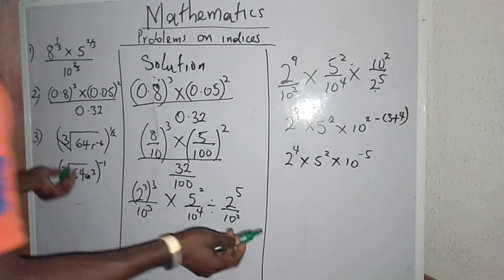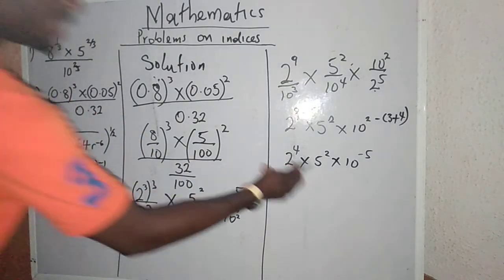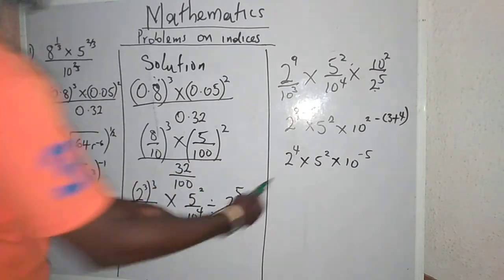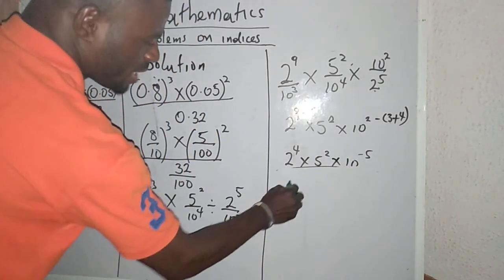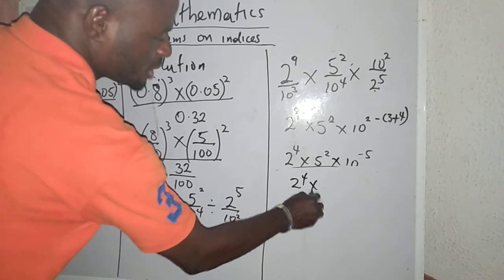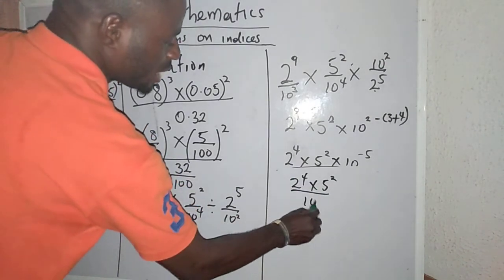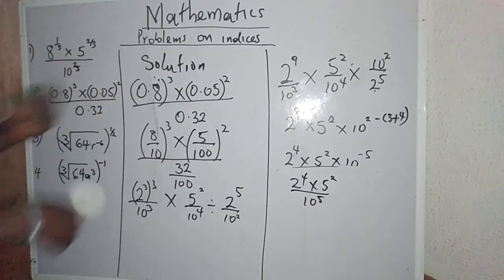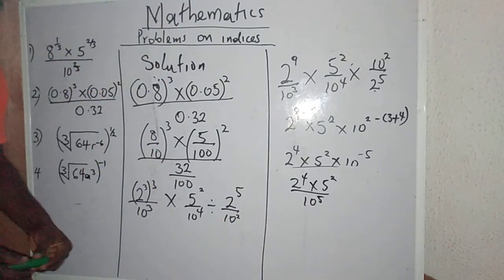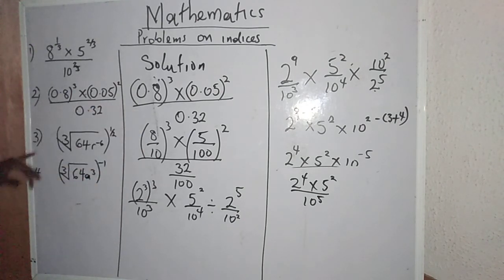Now I can express the result: 2 raised to the power 4, multiplied by 2 raised to the power 2, divided by 10 raised to the power 5. You can leave it like this, or if you like, you can simplify further. Thank you for watching. In the next video, we will solve the two remaining questions.